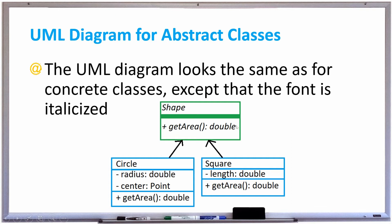We list the abstract methods that are also italicized and both circle and square classes are pointing to shape because they're both subclasses of the class shape and shape is the base class.